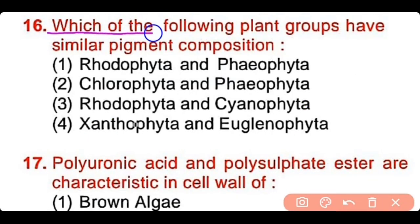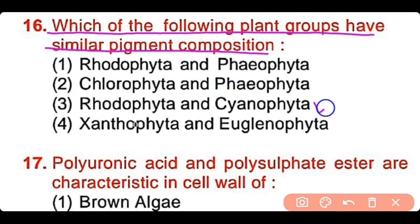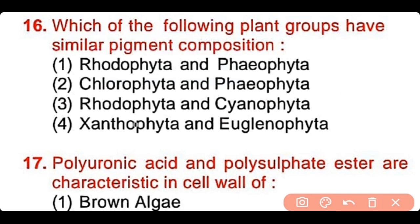Question number 16: Which of the following plant groups have similar pigment composition? Rhodophyta and pyrrophyta, chlorophyta and pyrrophyta, rhodophyta and cyanophyta, or xanthophyta and euglenophyta? The correct answer is option 3. Rhodophyta and cyanophyta have similar pigments: chlorophyll A, chlorophyll D, and carotene.